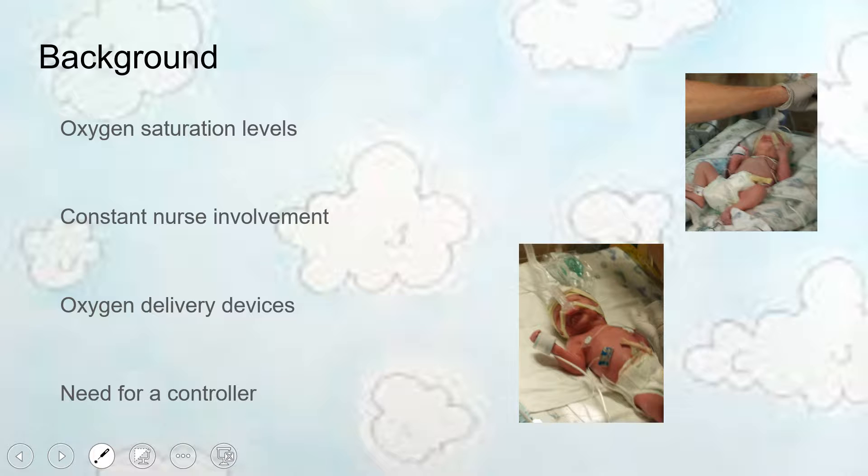Ideal levels, 90 to 98 percent, but if they ever fell outside of that range, there'd be an alarm, and how they'd adjust it is they'd just simply adjust a knob that would change basically the concentration of oxygen coming into the baby.